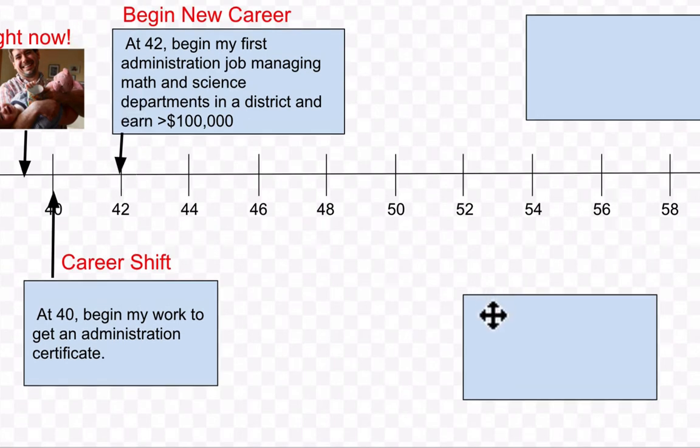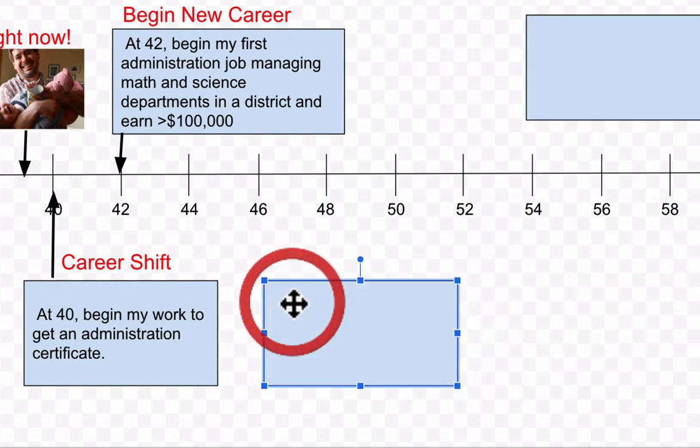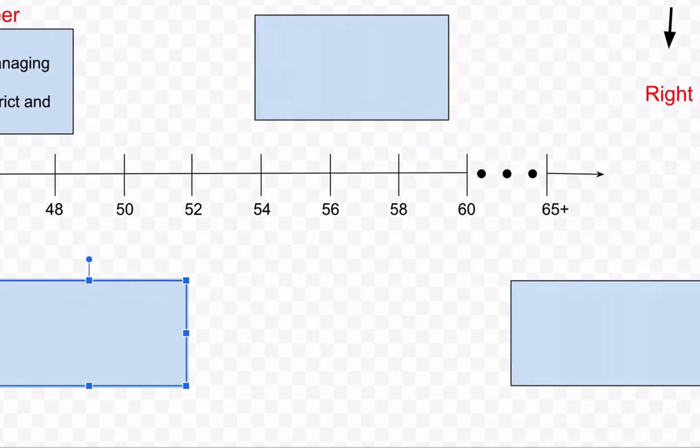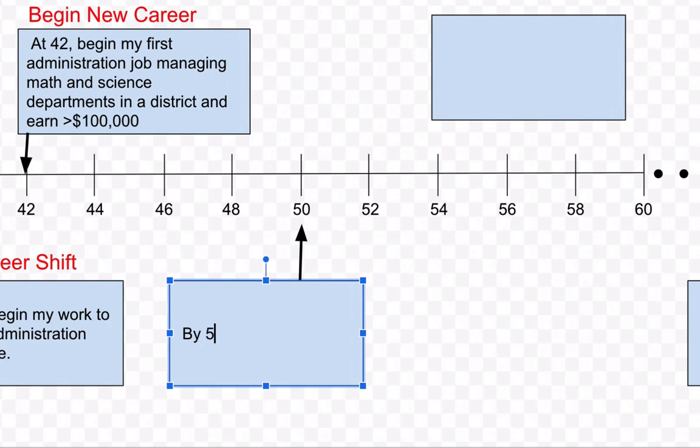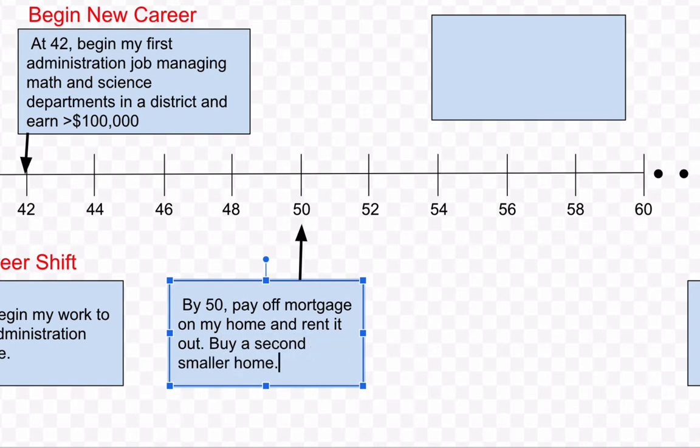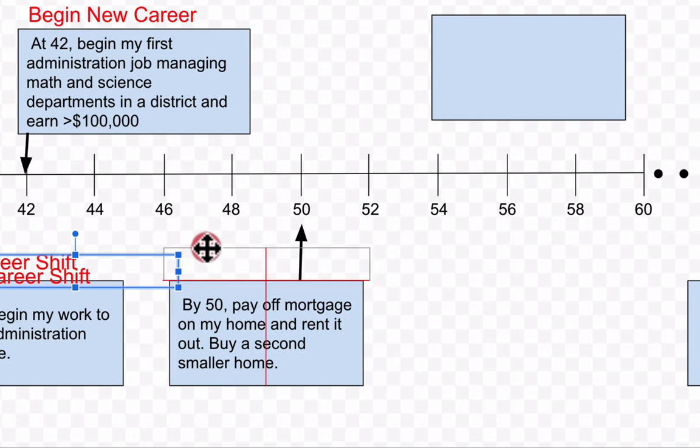Okay, so looking good. 42. Now if I'm doing this, I'm thinking, okay, well I've got that work, it's going well for me. That probably means by 50 I can do a couple other things. So by 50, pay off mortgage on my home and rent it out. Buy a second smaller home.